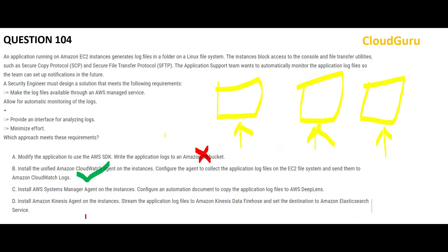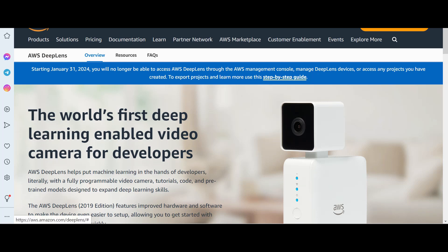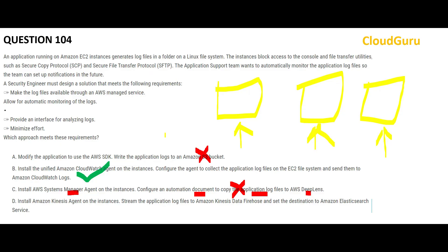Option C mentions Systems Manager agent — it says you configure a document to copy log files to DeepLens. DeepLens is a video camera; it is not for logging, so Option C is wrong. Option D says to use the Kinesis agent and stream the log files to Kinesis Firehose, setting the destination as Elasticsearch Service.